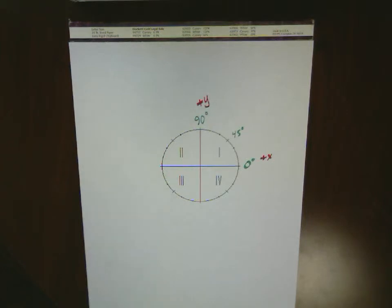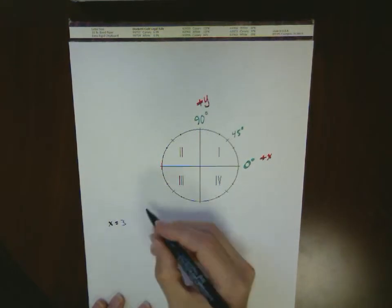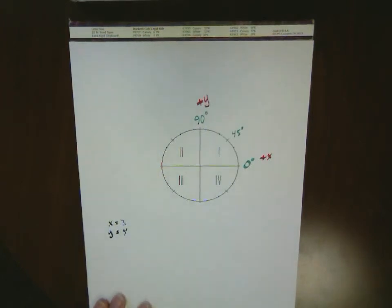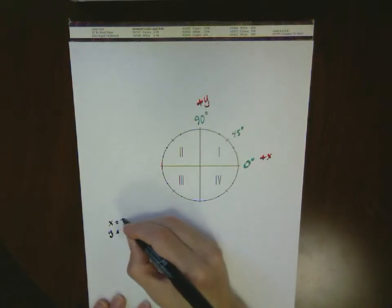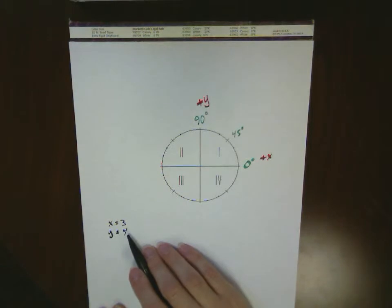So let's take a look at an example. Let's say we were given a value of x equals 3 and y equals 4. It doesn't have to be integer values. These are just the ones we're using in this particular case. First thing I want you to take a look at is that the x value is smaller than the y value.